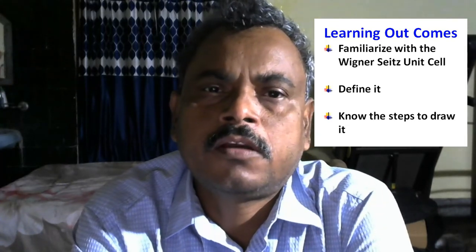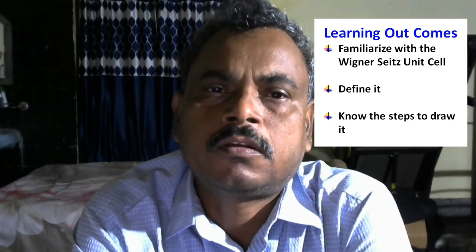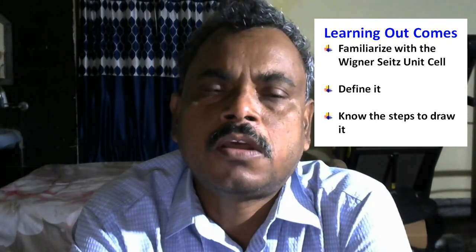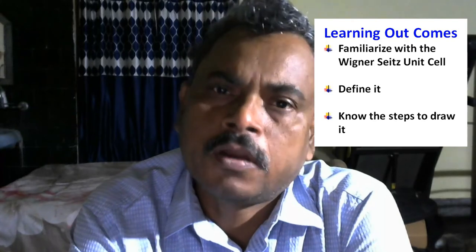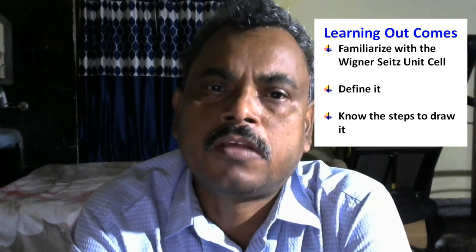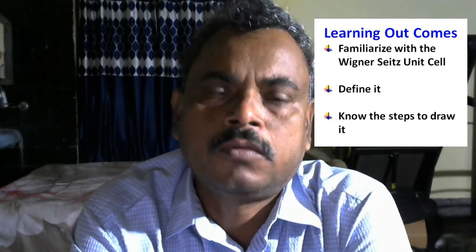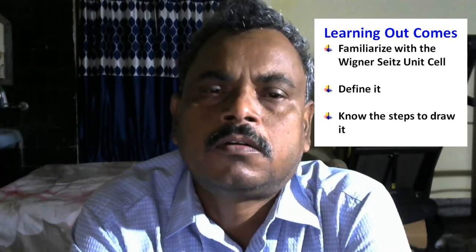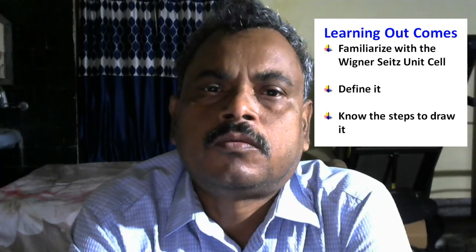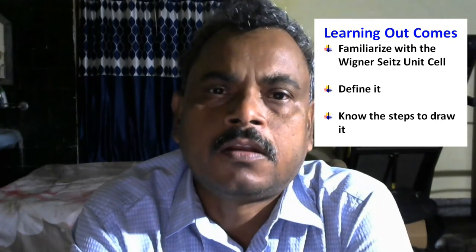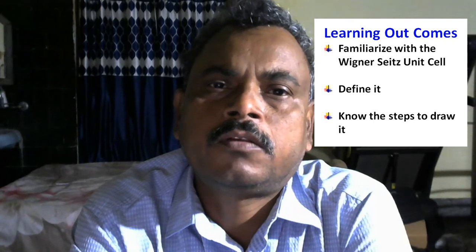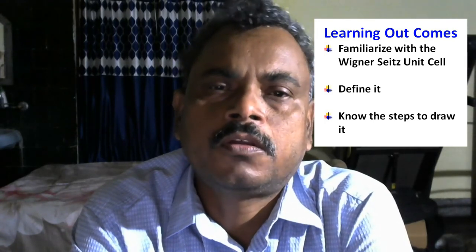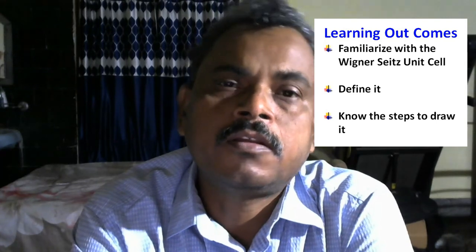It is very important to know about these two types of unit cells: first, the Wigner-Seitz cell in the general lattice system, and second, the Wigner-Seitz cell in the reciprocal lattice system, which is called the Brillouin zone. In today's class we will cover the Wigner-Seitz cell, and in the next session we will see the Brillouin zone.